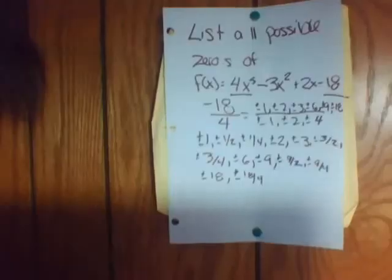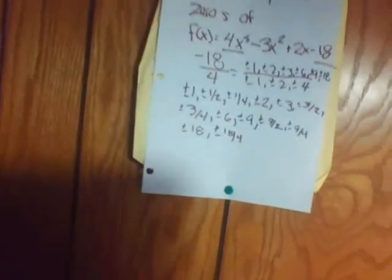And that would be your list of your possible zeros, but you're not supposed to figure it out, so that's all you have to do.